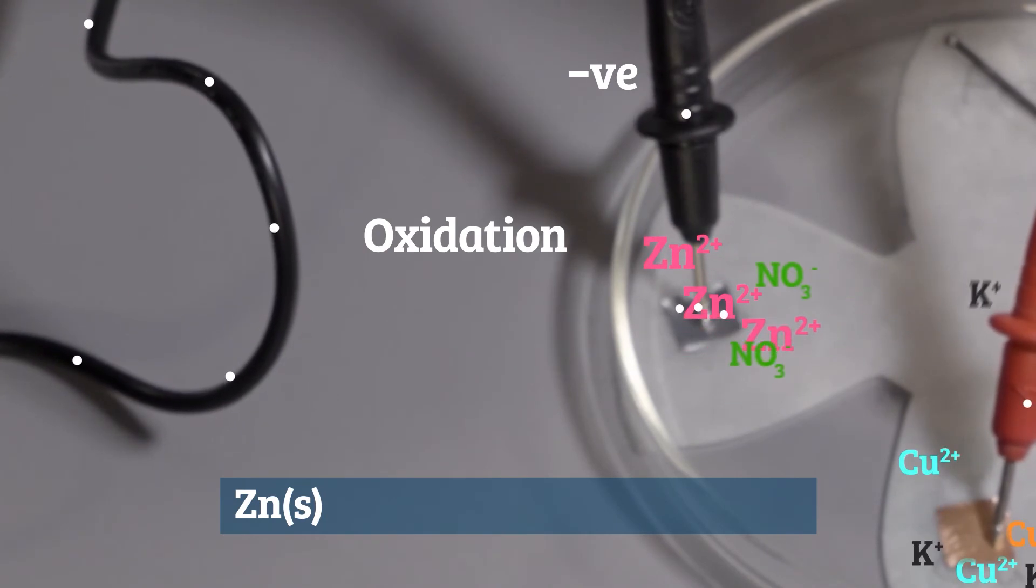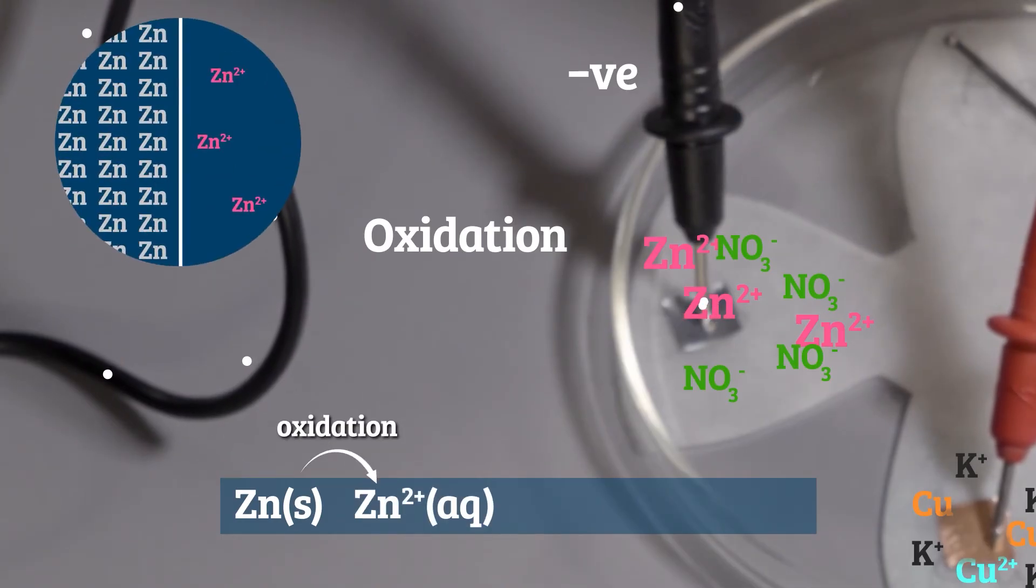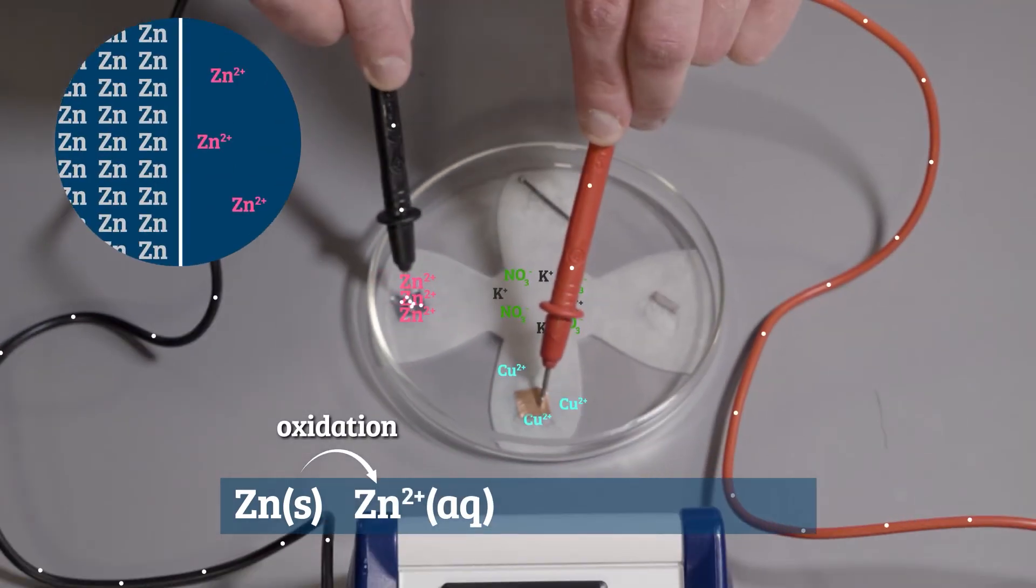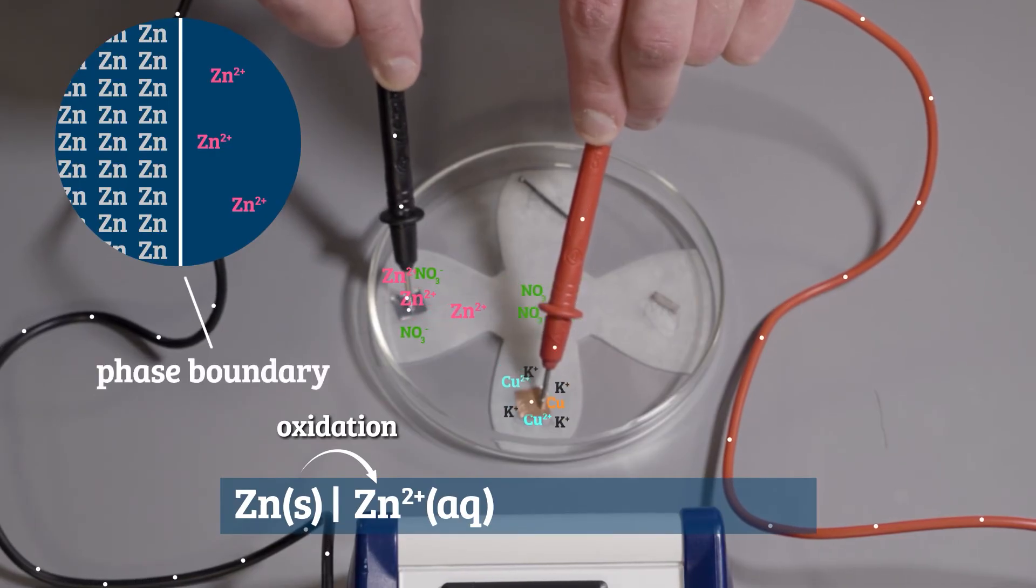The oxidation state of zinc metal is 0, whereas zinc ions are in the plus 2 oxidation state. Because they are in different phases from each other, zinc metal being solid, and zinc ions in solution, we put a single solid line between the two, called a phase boundary. We represent the salt bridge using two vertical lines.